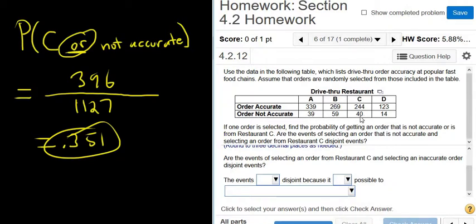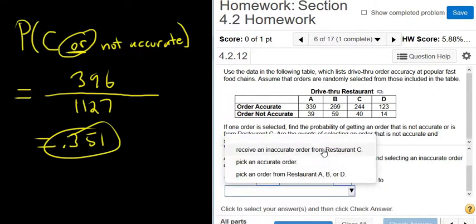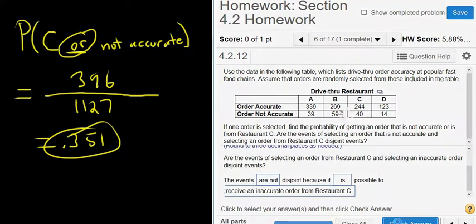So there's 40 ways to get an order that is not accurate from restaurant C. So the events are not disjoint because it is possible to get an inaccurate order from restaurant C. So receive an inaccurate order from restaurant C. Check answer, and that's it.